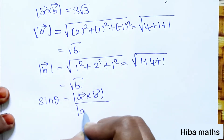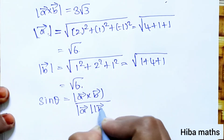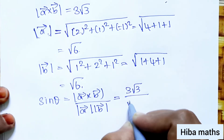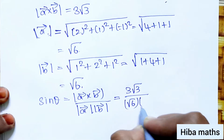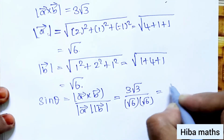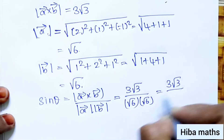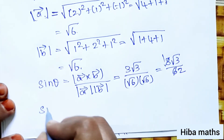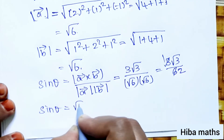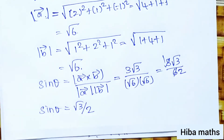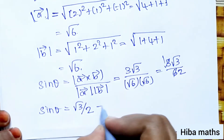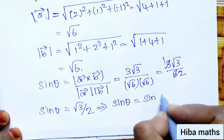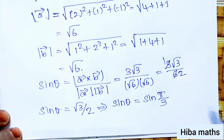Substituting into the formula: sin θ equals modulus of a cross b divided by modulus of a into modulus of b, that is 3 root 3 divided by root 6 into root 6, which is 3 root 3 divided by 6, giving sin θ equal to root 3 by 2. Therefore sin θ equals sin π by 3, that is sin 60 degrees, and θ equals π by 3.